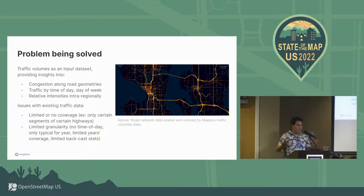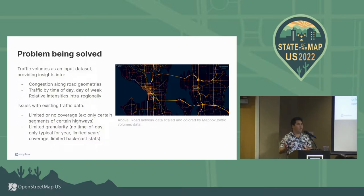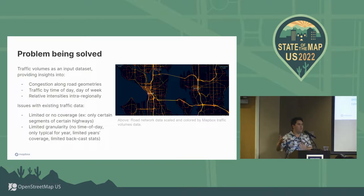What problem am I solving? You can imagine if you're a transportation planner, you might be very interested in the number of vehicles moving down a road. This has implications from congestion to the turnover in the asphalt — how frequently you need to repave. If you're a transit agency, you might want to route your vehicles along lower congestion roads adjacent to higher congestion roads. Another application is QA: the more you understand the traffic volume on that road, the more you can evaluate how representative live speed data is compared to typical volume.